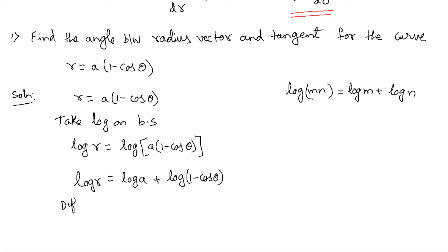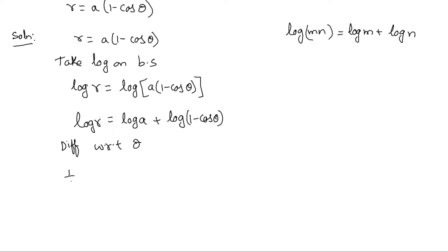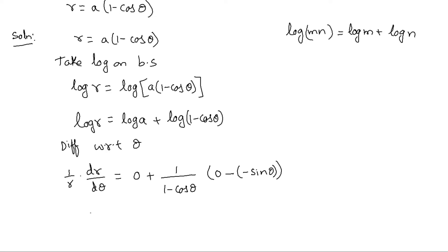Now I will differentiate both sides with respect to θ. Differentiating log r gives (1/r)(dr/dθ). On the right side, log a is a constant so its derivative is zero. Differentiating log(1 - cos θ) gives 1/(1 - cos θ) times the derivative of (1 - cos θ). The derivative of 1 is 0 and the derivative of cos θ is -sin θ, so we get +sin θ/(1 - cos θ).